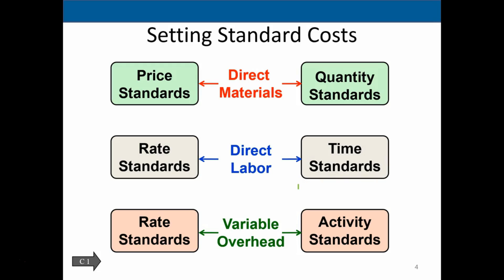If we're over in terms of wages, the question is whether it's because rates are higher than expected or because production is taking more time than planned. It could also go the other way — if we're doing better, we ask whether the rate is lower or whether people are working more efficiently. For variable overhead, we also have a rate standard and an activity standard that we apply.